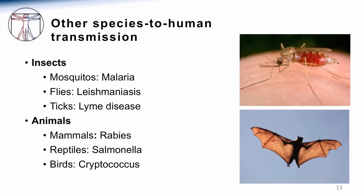How about transmission from other species to humans? Insects — mosquitoes — can transmit malaria. Flies, particularly the sandfly, can transmit leishmaniasis. Ticks can transmit Lyme disease. Animals can also transmit disease — rabies, for example, is transmitted by dogs and bats, and bats are actually one of the more common causes of rabies transmission in the U.S. Reptiles like turtles, lizards, and snakes can transmit salmonella, and birds can carry and transmit cryptococcus, which is a fungal infection that immunocompromised patients can get.